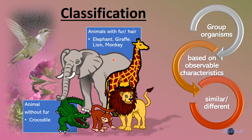That is the elephant, giraffe, lion, and monkey. While the animal that is different because it does not have fur falls into another group. This is a very simple introduction to the process of classification.